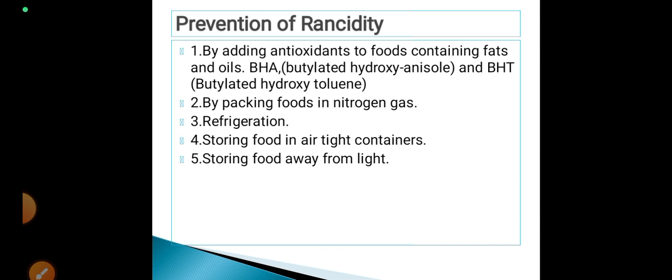Now, how can we prevent rancidity? By adding antioxidants to foods containing fats and oils. Antioxidants are also naturally present in fruits and vegetables, but when it comes to fats and oils, to reduce or prevent rancidity completely, there are two chemical compounds: BHA and BHT — butylated hydroxyanisole and butylated hydroxytoluene. These two chemicals are added to prevent rancidity.